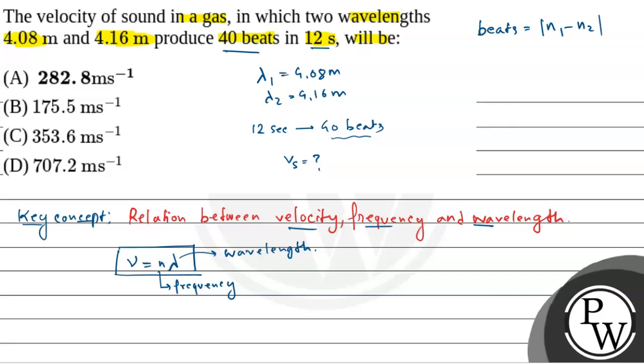The frequency n1 is V by lambda 1, and the frequency n2 is V by lambda 2. Here V is the velocity of sound. That means n1 equals c by 4.08 and n2 equals c by 4.16.